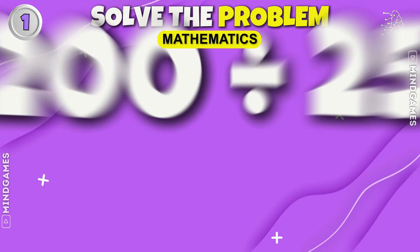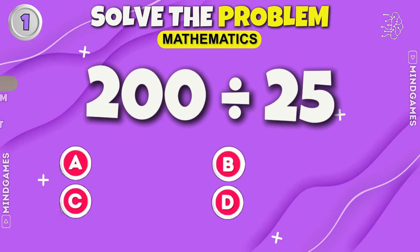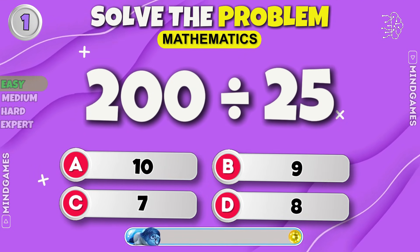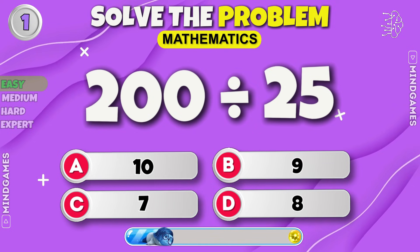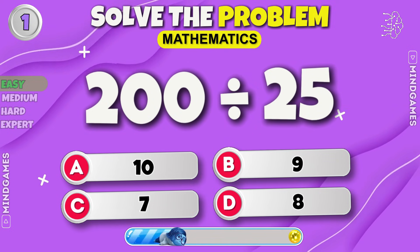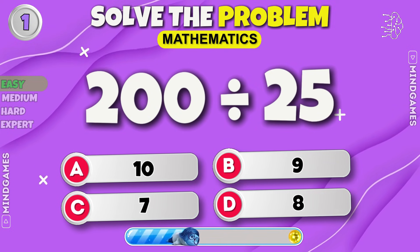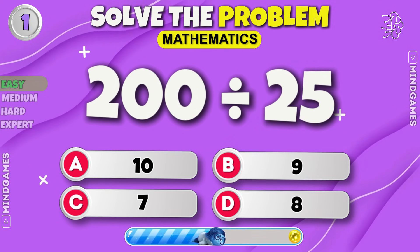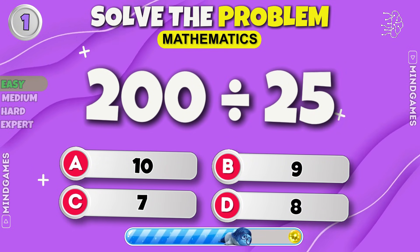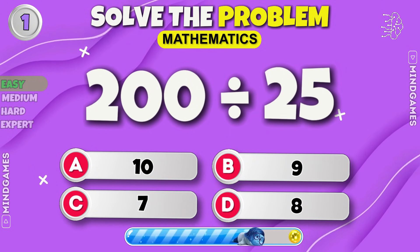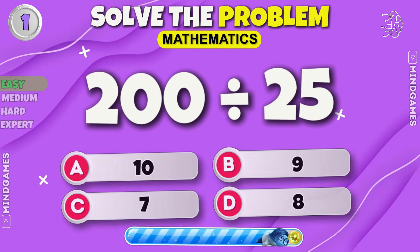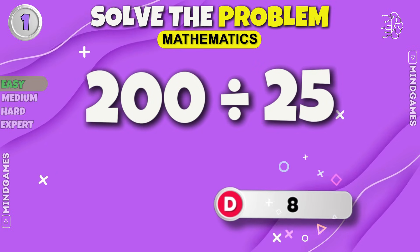Easy level. 200 divided by 25. It's eight.